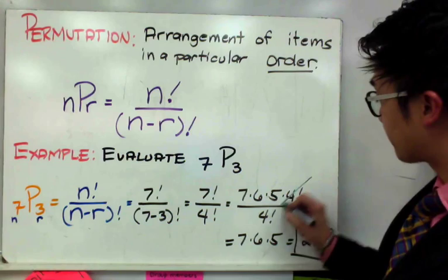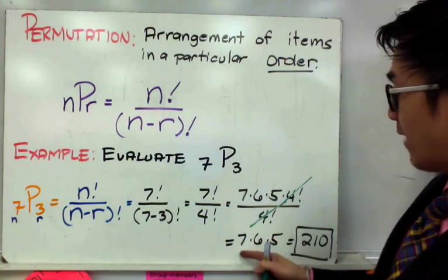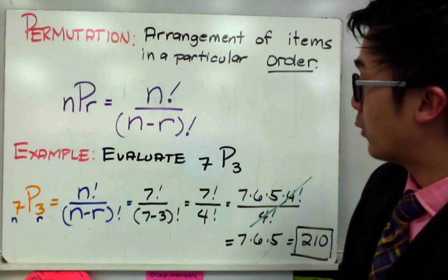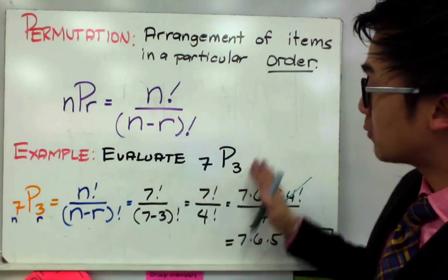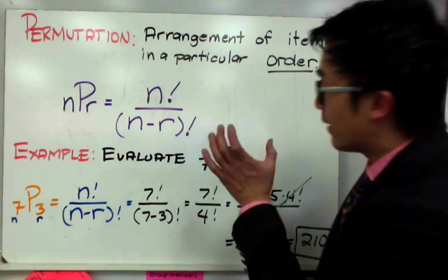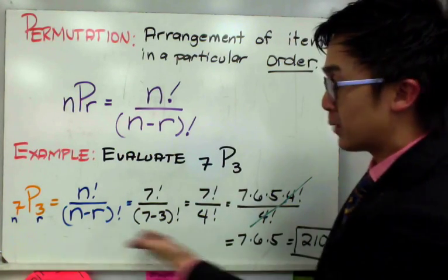And when you cancel this out, we have left with 7 times 6 times 5 which is 210. So in this particular permutation problem, we have 210 ways on how to arrange this number in this particular form.